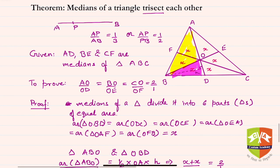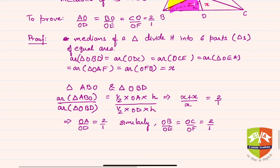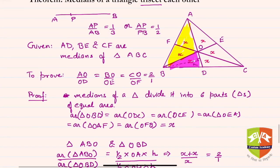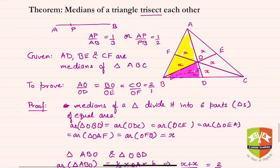Hence medians of a triangle trisect each other is proved. Now you can use multiple other methods to prove this, for example coordinate geometry or Pythagoras theorem, but this one looks very simple. So the medians of a triangle trisect each other.